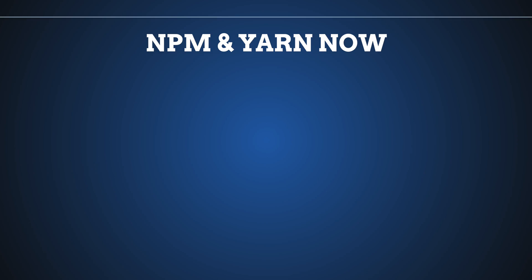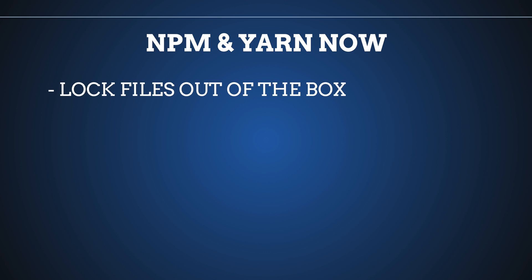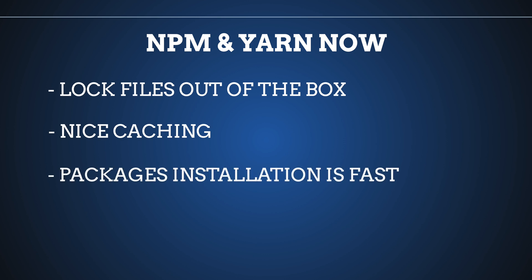Lots of people jumped from NPM to YARN because it was much faster and more reliable. This is why after some time NPM decided to improve things — they copied a lot from YARN and really improved NPM itself. Nowadays NPM and YARN classic (version 1) are almost the same. It doesn't really matter which one you use; you get lock files in both out of the box and caching and installation speed are really nice in both.